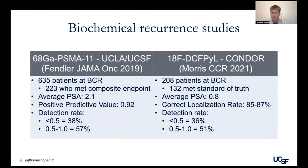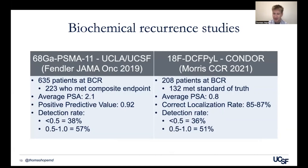Biochemical recurrence is really a workhorse of PSMA PET. There are trials with gallium PSMA-11 and DCF-PYL in the biochemical recurrence setting. The positive predictive value or correct localization rate between these two molecules is nearly identical, and detection rates at different PSA cutoff values are very similar — again highlighting that PSMA-11 and DCF-PYL should be considered equivalent and interchangeable. This data was used to gain FDA approval for both agents in 2020 and 2021.